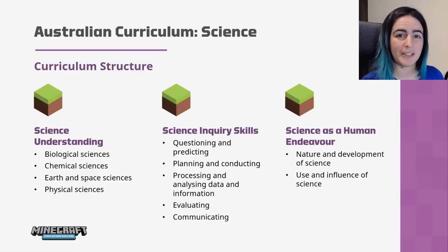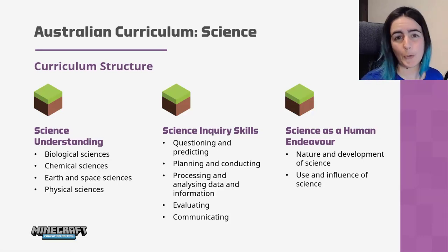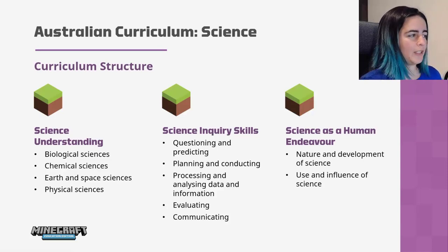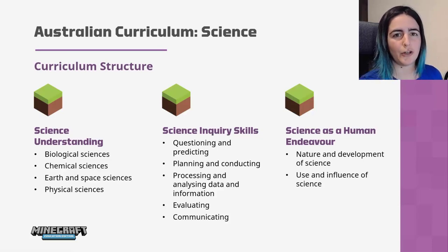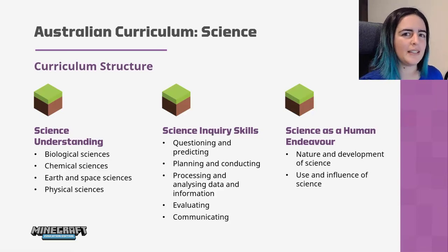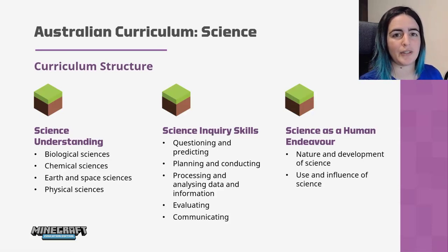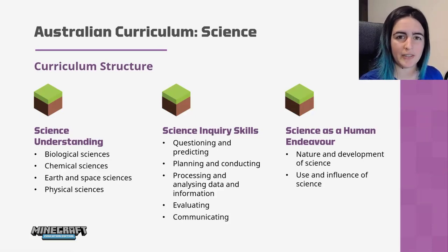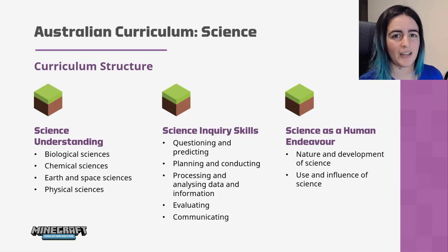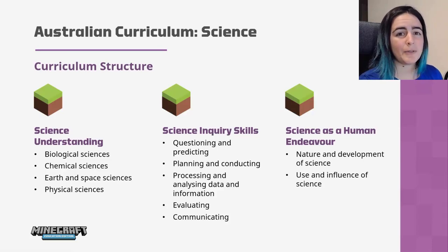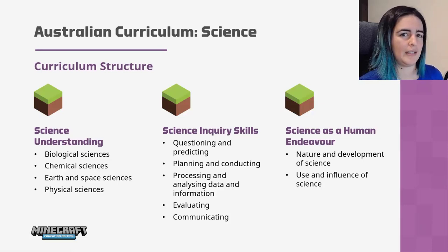The science curriculum is separated into three strands, from foundation or pre-primary all the way through to year 10. The first strand is science understanding, which goes into the content and topic knowledge of science. Science understanding is further split into four types: biological sciences, chemical sciences, earth and space sciences, and physical sciences. Typically, you spend about a term on each of these topics.